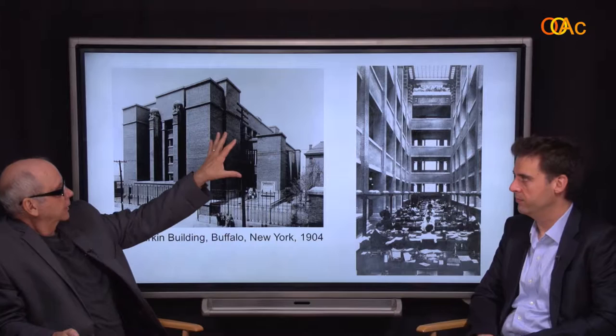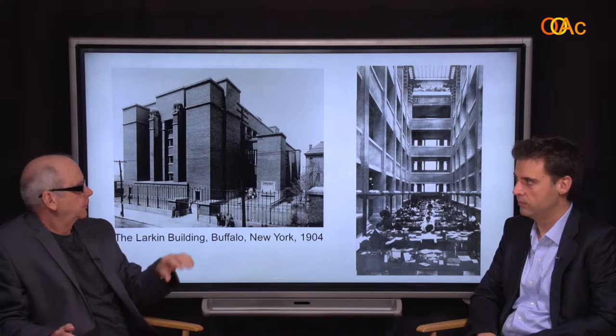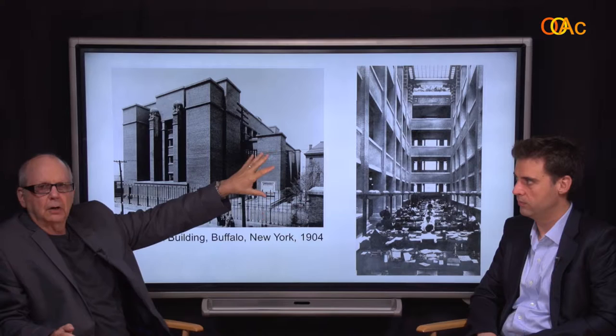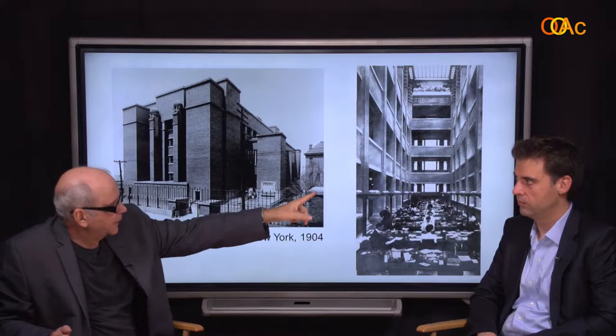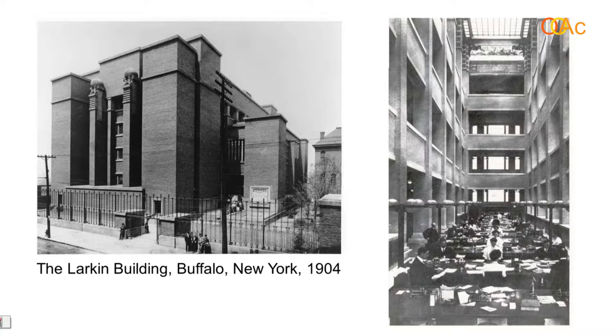We'll start with the Larkin Building in Buffalo, New York, which we looked at before. There are two parts to the building: the main part, a service part where the lockers are, fire stairs, and the entrances in between. Then the main part has balconies going around and a space all the way up to a skylight in the center.